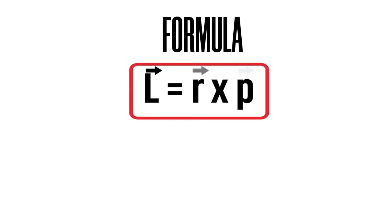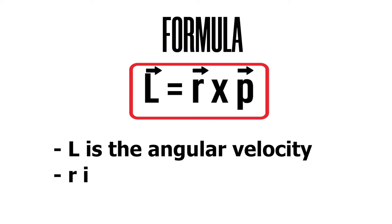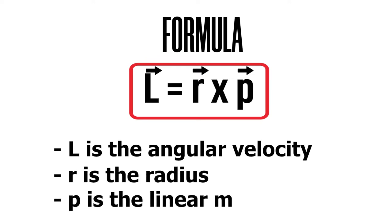Here's the formula of the angular momentum where L is the angular velocity, r is the radius, and p is the linear momentum.